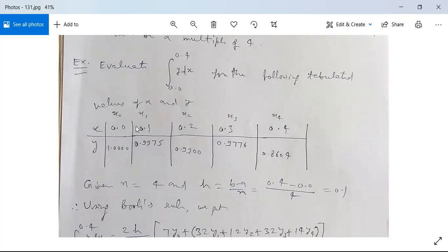So it comes out to be 0.4/4 means 0.1, so h is 0.1. That is why we have 0.0, next 0.0 plus 0.1 is 0.1, 0.1 plus 0.1 is 0.2, 0.2 plus 0.1 is 0.3, and 0.3 plus 0.1 is 0.4.